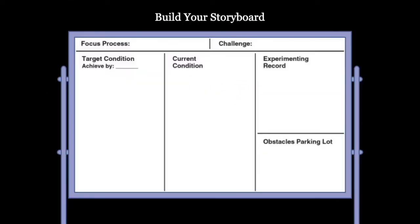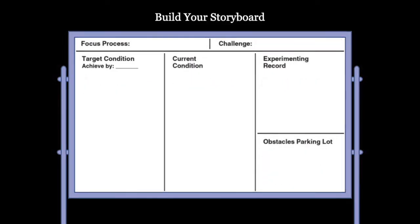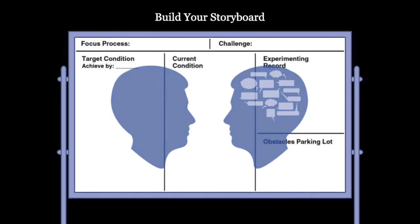The storyboard is a physical board built, owned, and maintained by the improver. It aims at developing fundamental micro-skills of scientific thinking — mainly seeing and understanding the necessary logic links between the challenge, the next target condition, the current condition, the obstacles, and the experiments we run. In addition, the storyboard is like a measurement instrument for the coach, displaying the current condition of the improver's way of thinking.